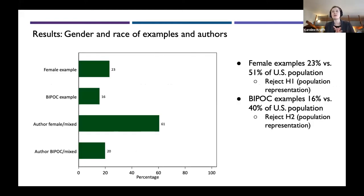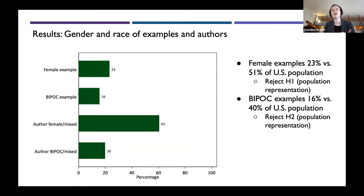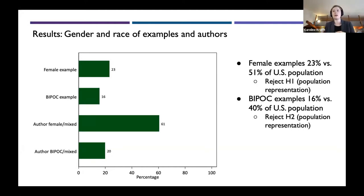Turning to results: 23% of the examples where we could identify gender were female, versus 51% of the US population. We reject the hypothesis of population-level representation — women are very much underrepresented in these K-12 lessons. Likewise, BIPOC examples are 16% of examples versus 40% of the US population, so we again reject population-level representation.